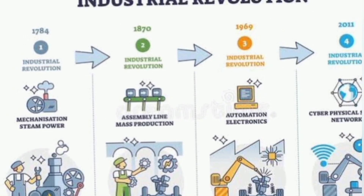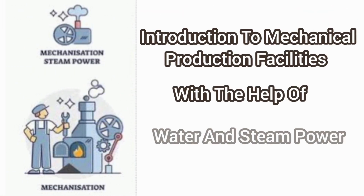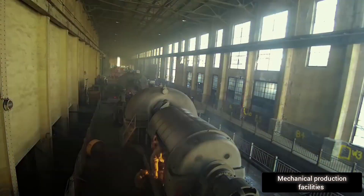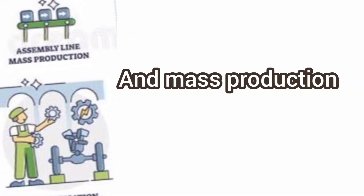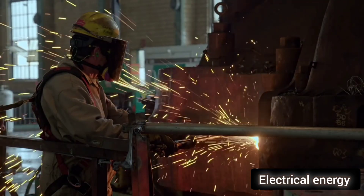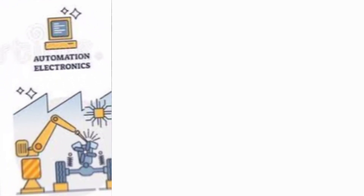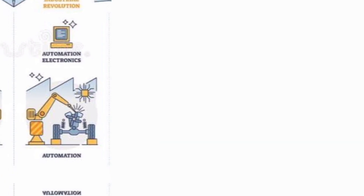Industrialization occurred in four phases. The first one is through the introduction of mechanical production facilities with the help of water and steam power. The second one is through the introduction of a division of labor and mass production with the help of electrical energy. The third one is through the use of electronic and IT systems that further automate production.